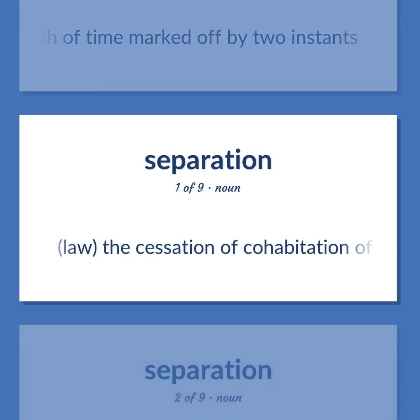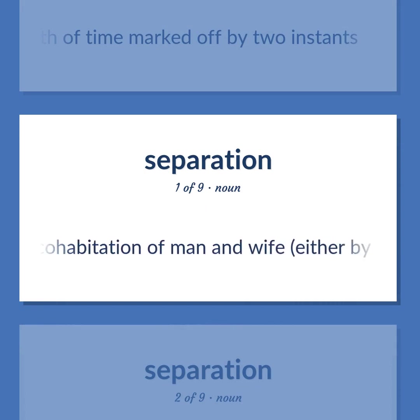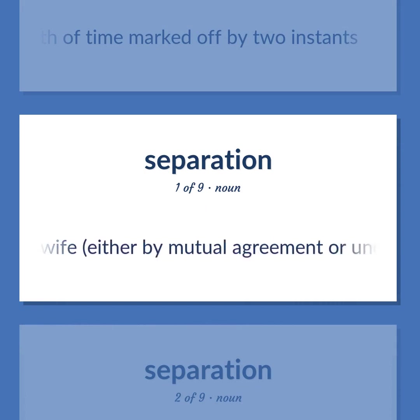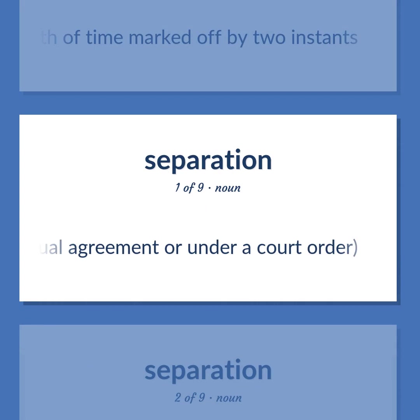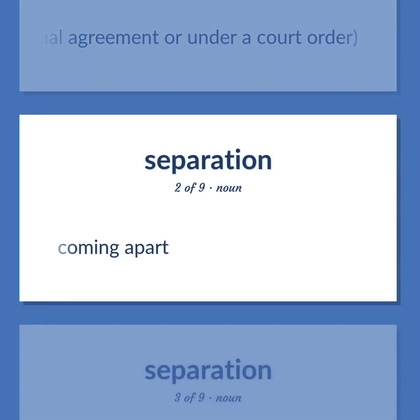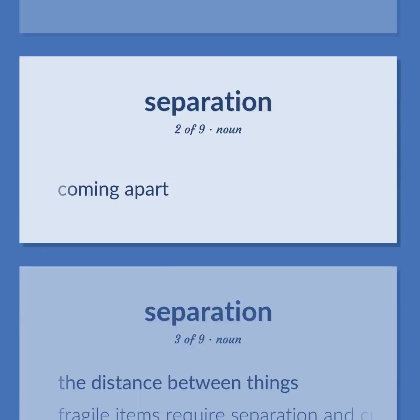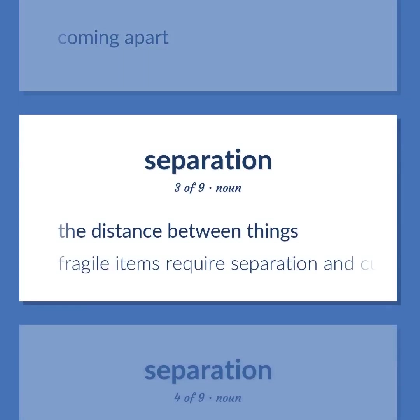Law: The cessation of cohabitation of man and wife, either by mutual agreement or under a court order. Coming apart. The distance between things.